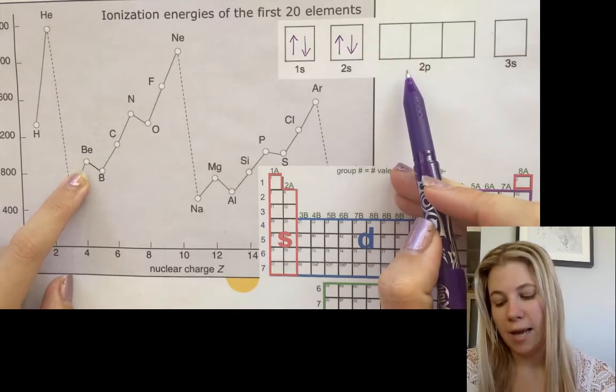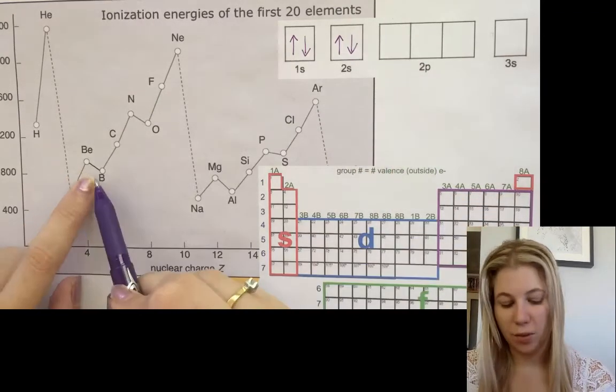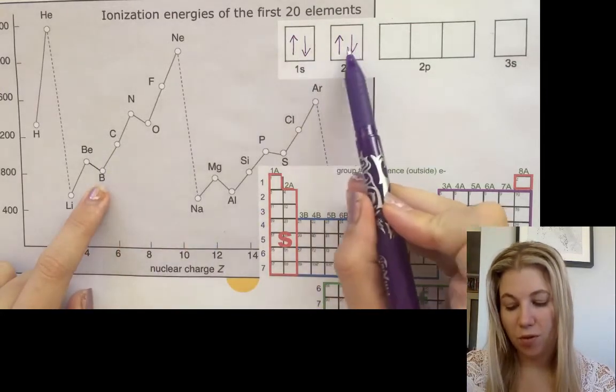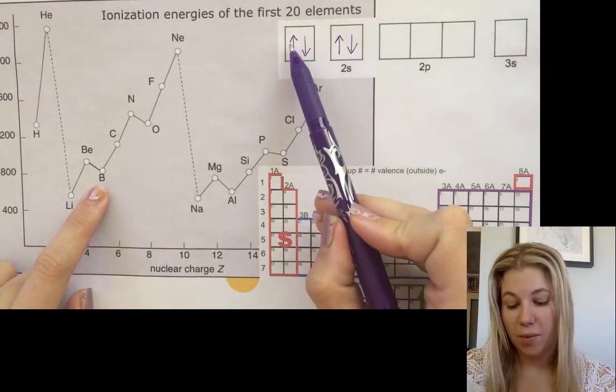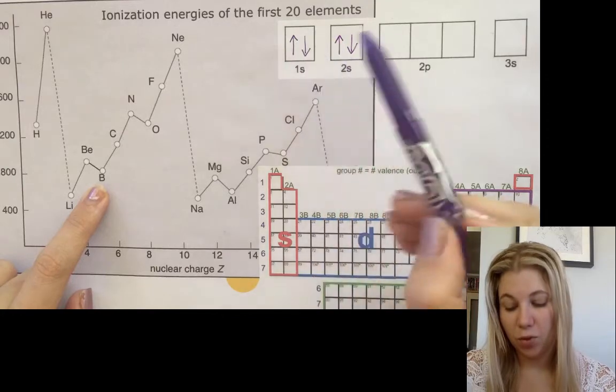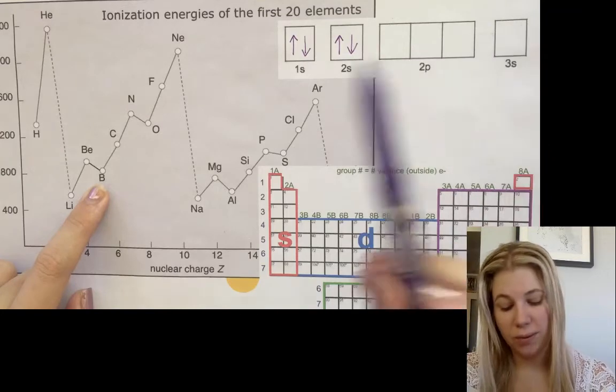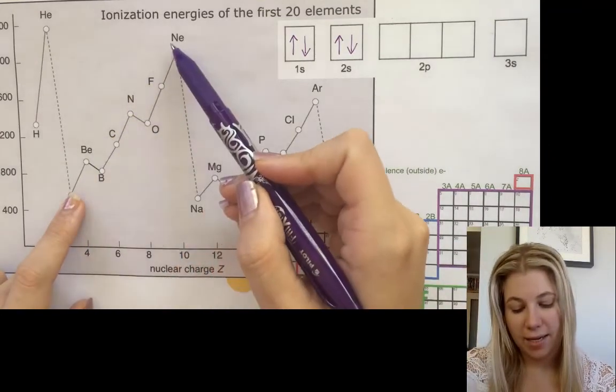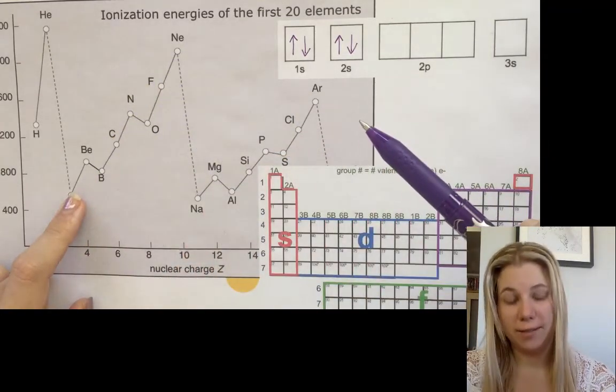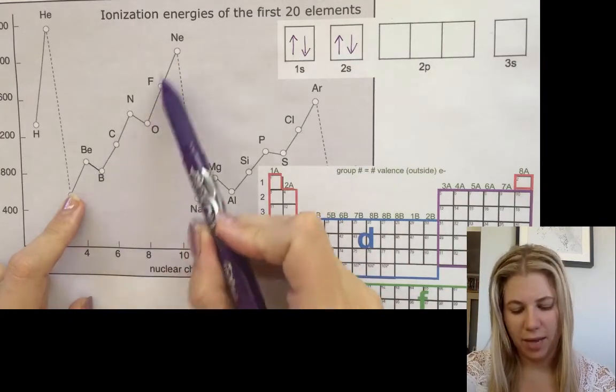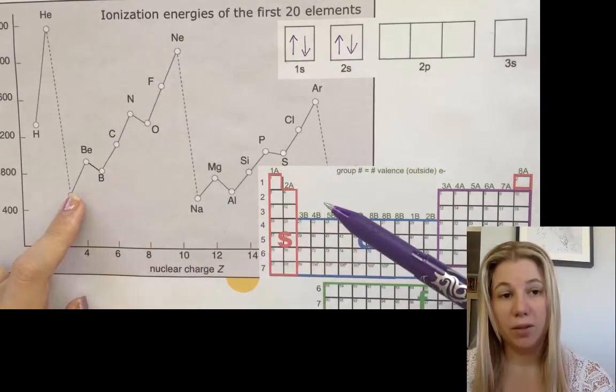Now when we get to the p orbitals, it happens a little bit differently. So I want you to look at this ionization energy here. If they all filled up the same way, this line here of the ionization energies would actually be straight. But as you can see, it's not straight. We have these little abnormalities throughout it. So we're going to look at why that is.